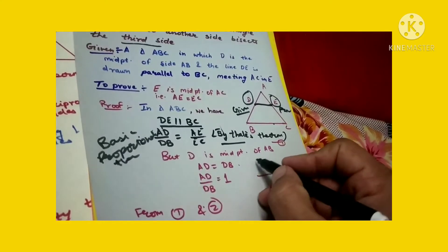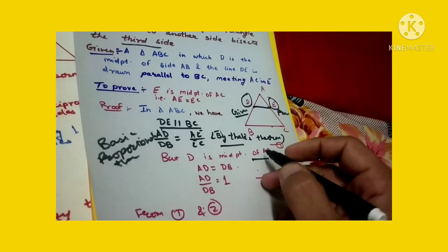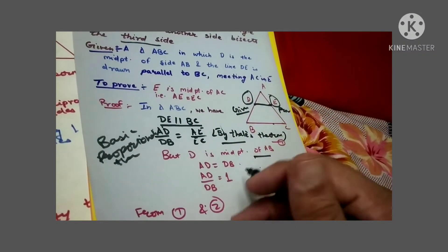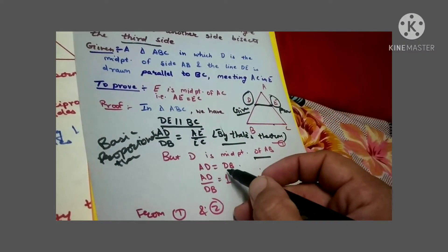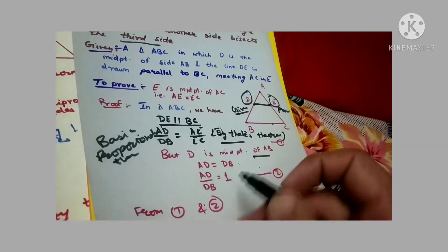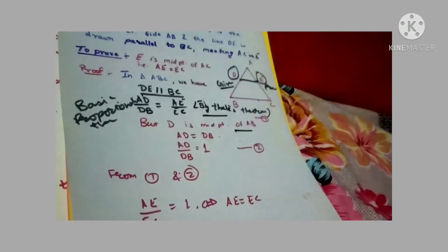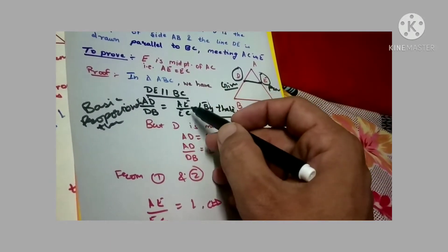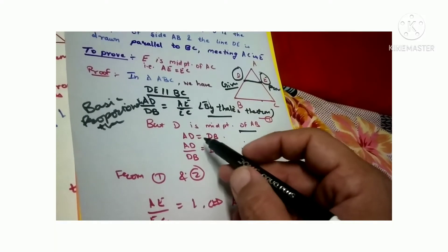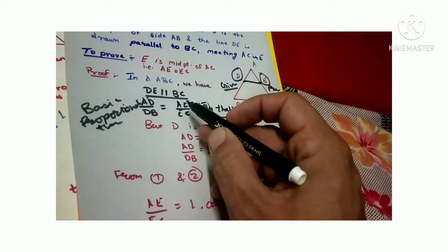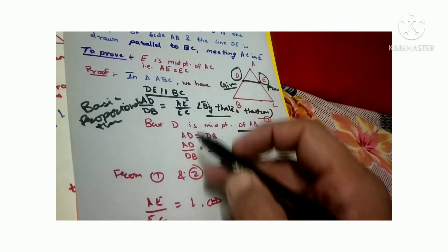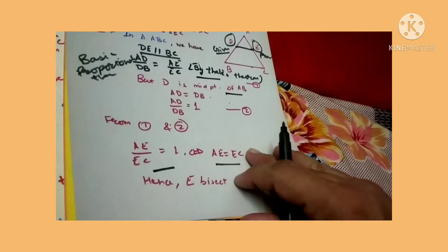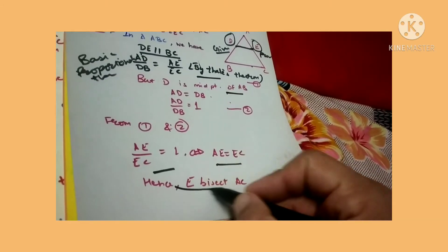Since D is the midpoint of AB, AD is equal to DB. Therefore AD by DB equals 1. From the BPT result, AE by EC also equals 1, so AE equals EC. Therefore E bisects AC, which is what we needed to prove.